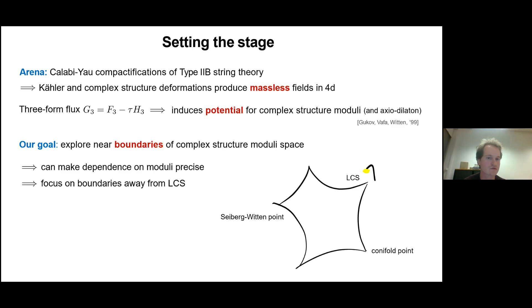There is already a well-described way to get rid of all these moduli: you turn on three-form fluxes — the Ramond flux F3 and the NSNS flux H3. This gives you a potential for your complex structure moduli and your axio-dilaton. If you want, you can go further and try to stabilize your Kähler moduli in this setup by using non-perturbative effects, but I won't go into these details.